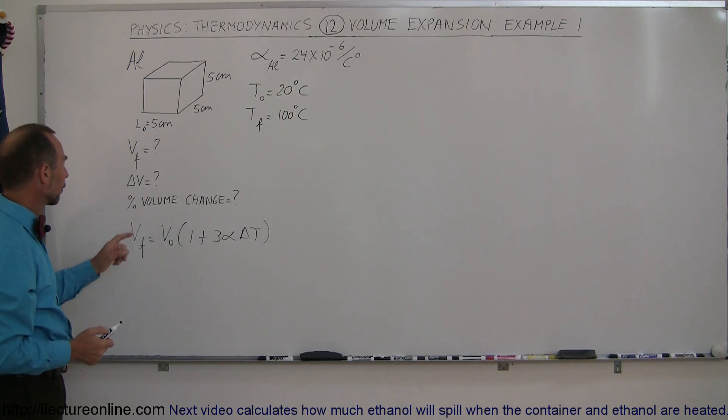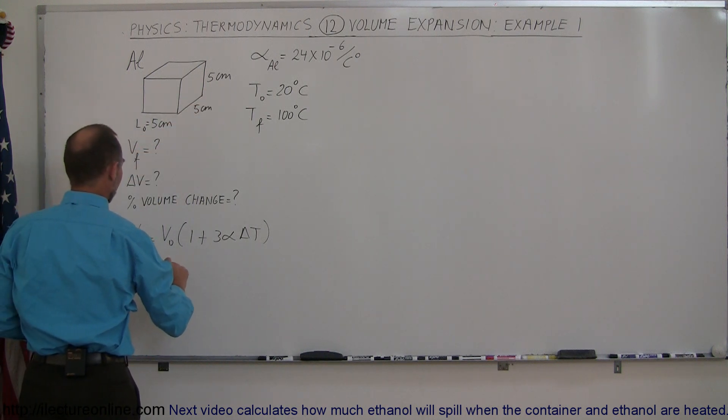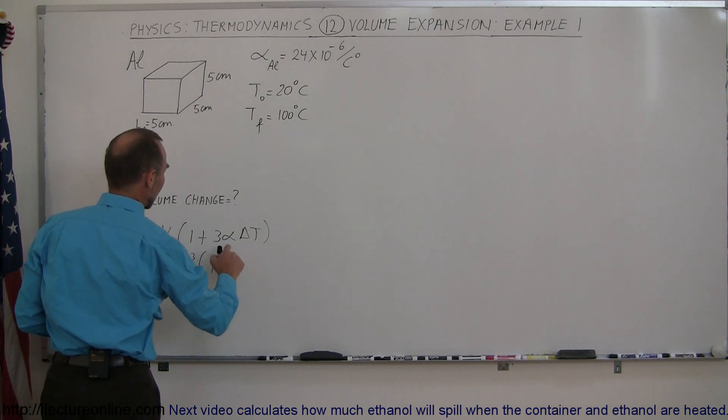So knowing this, we're going to plug in the original volume, which is the length times the width times the height. So this is equal to 5 centimeters cubed, original volume, times 1 plus 3 alpha.